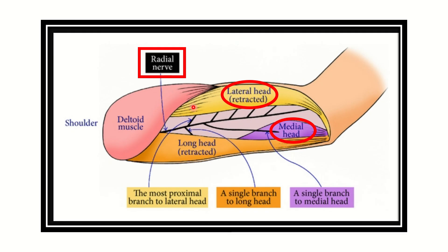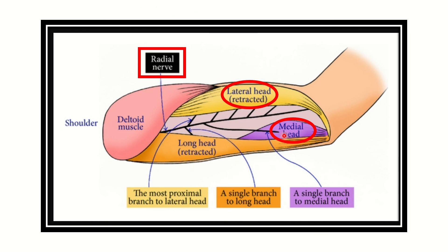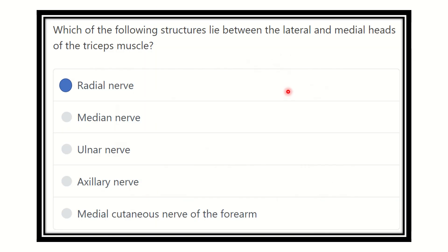In this picture of the arm we can see the triceps muscle with the long head, lateral head, and medial head. The structure which lies between the medial head and the lateral head is the radial nerve. So our final answer is the radial nerve, because the radial nerve lies between the lateral and medial head of the triceps muscle. Thank you all.